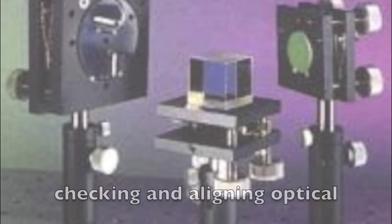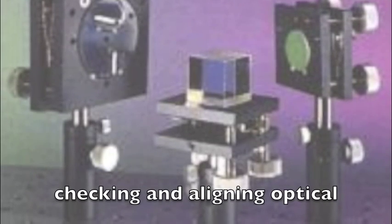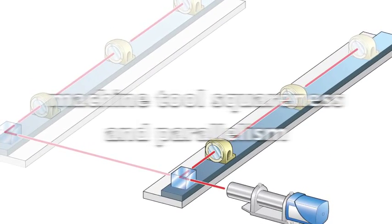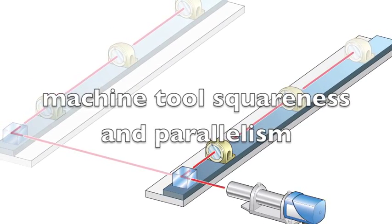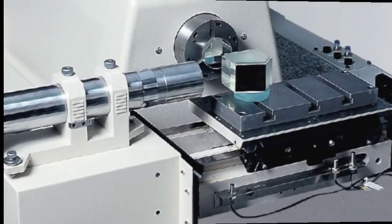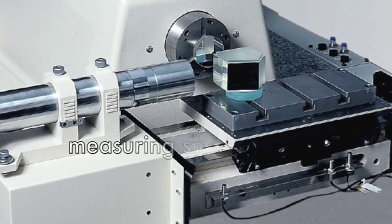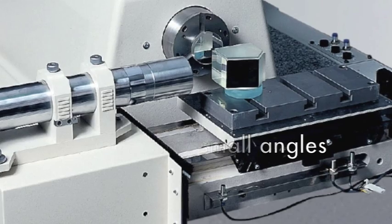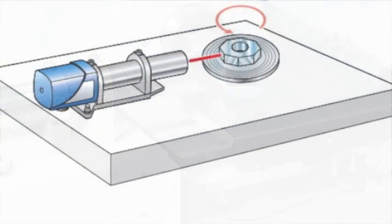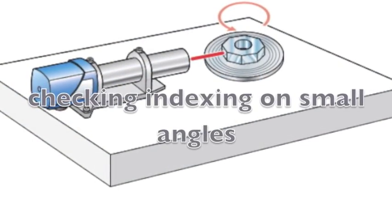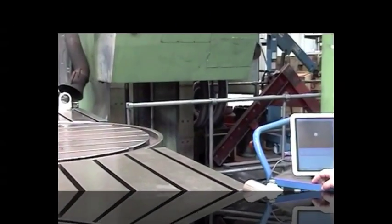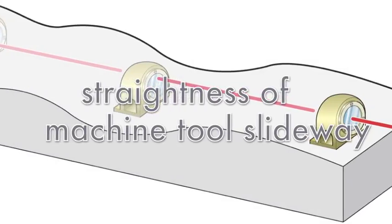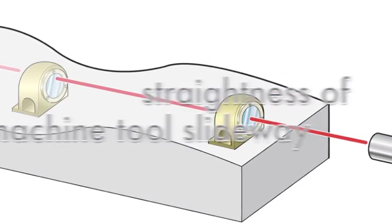These instruments are used for checking and aligning optical systems, checking machine tool squareness and parallelism, measuring very small angles of optical components and prisms, checking the indexing on small angles precisely, and its most popular application, checking the straightness of machine tool slide waves.